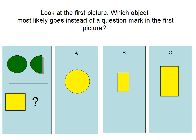Look at the first picture. Which object most likely goes instead of a question mark in the first picture?